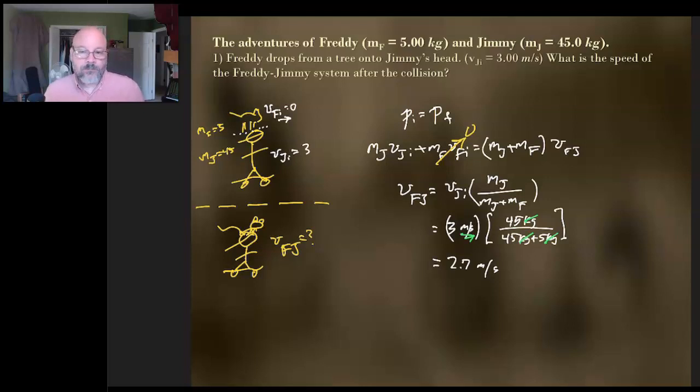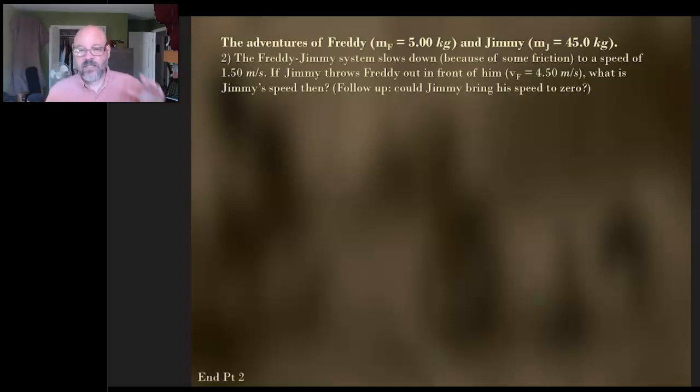All right, so I just worked this one out. Now the next one we're going to do is a variation on this, and we're going to kind of start fresh in some respects. But we still have Freddy and Jimmy, but now they've slowed down because there's some friction with the sidewalk. So they're going only 1.5 meters per second together. And then Jimmy's going to throw Freddy out in front of him to give him a new speed, and then we want to know what's Jimmy's speed.